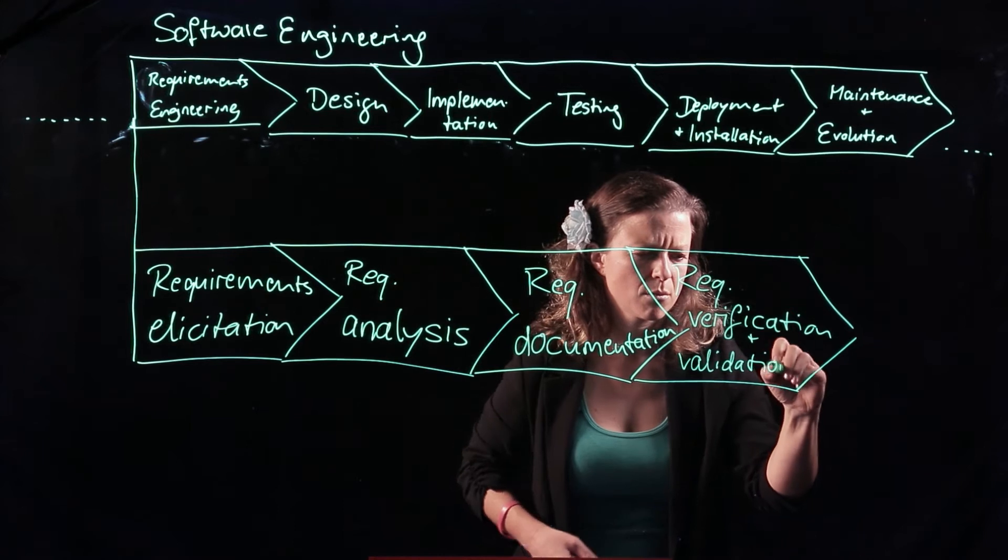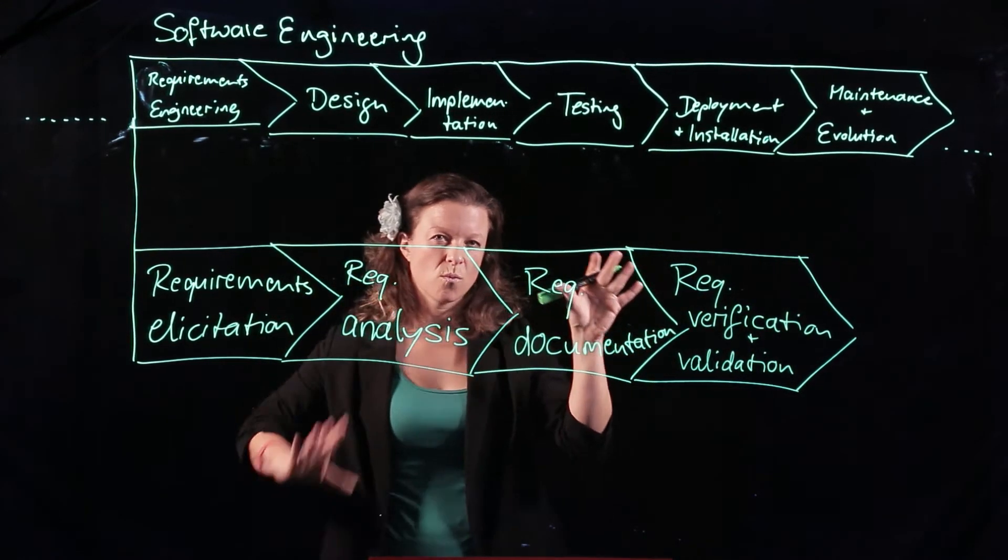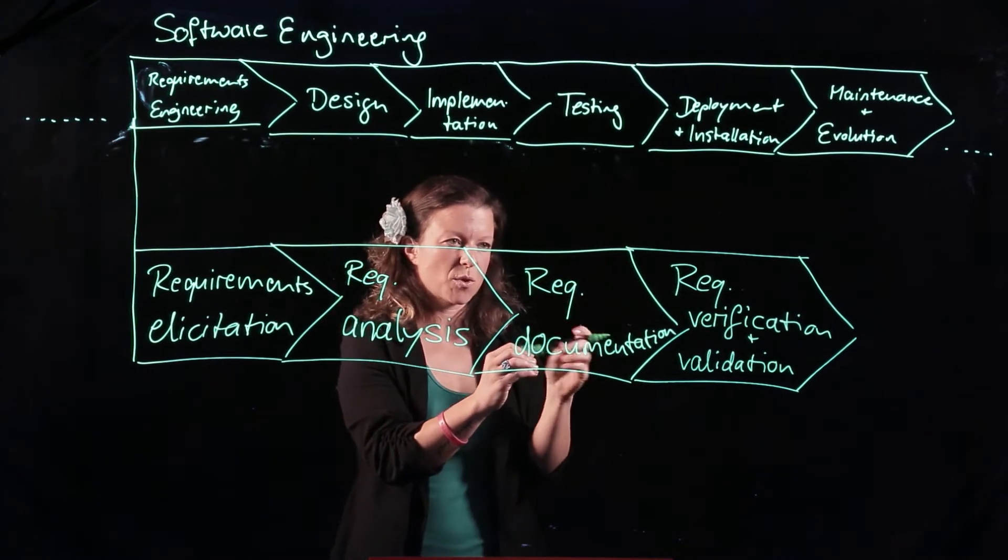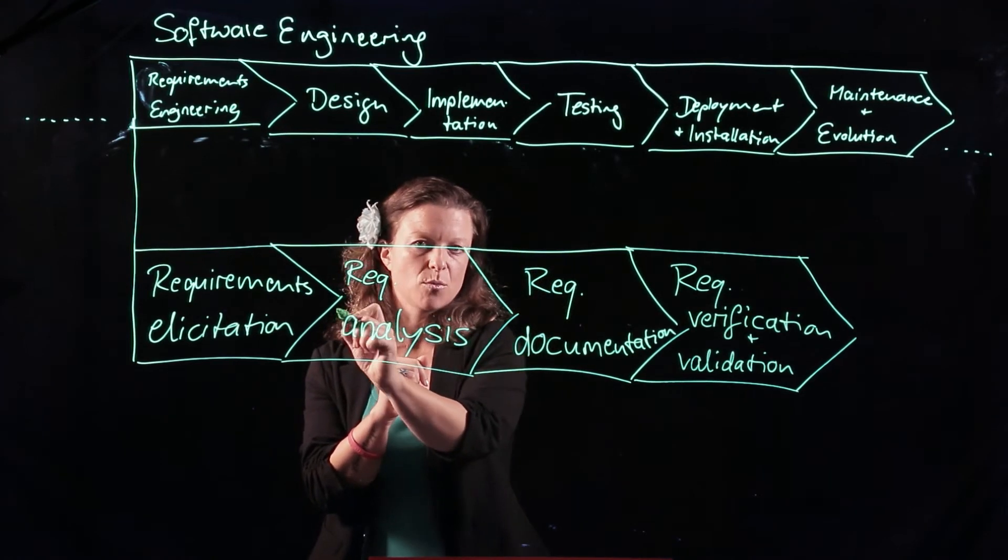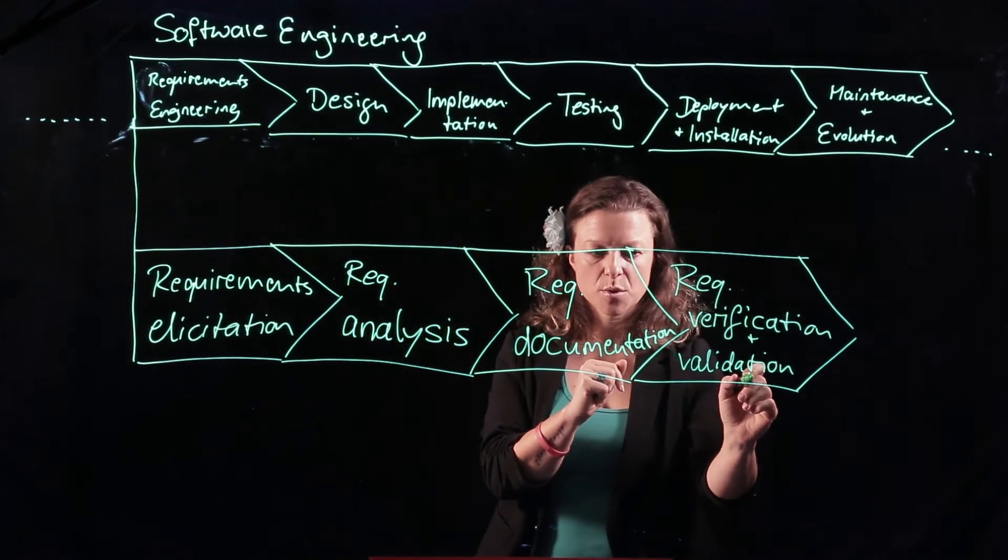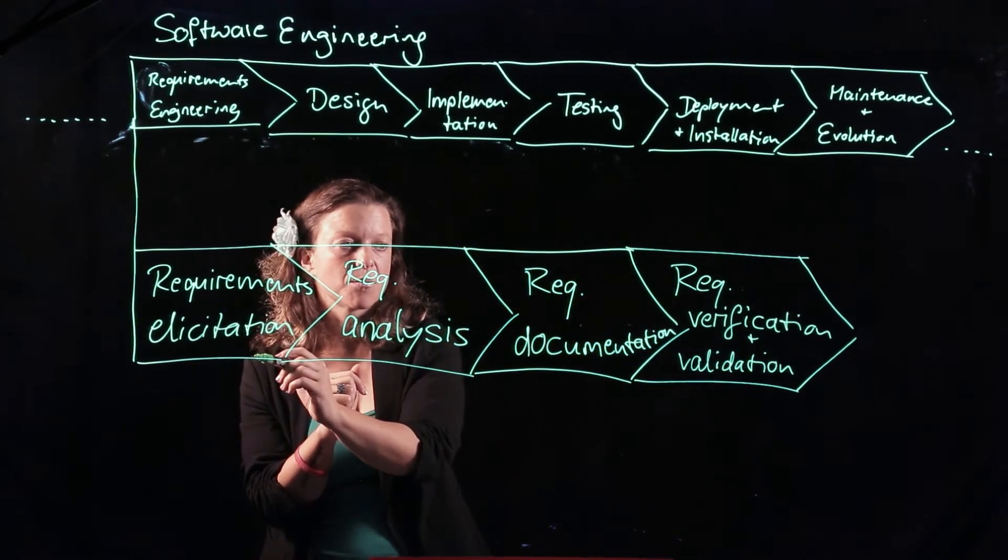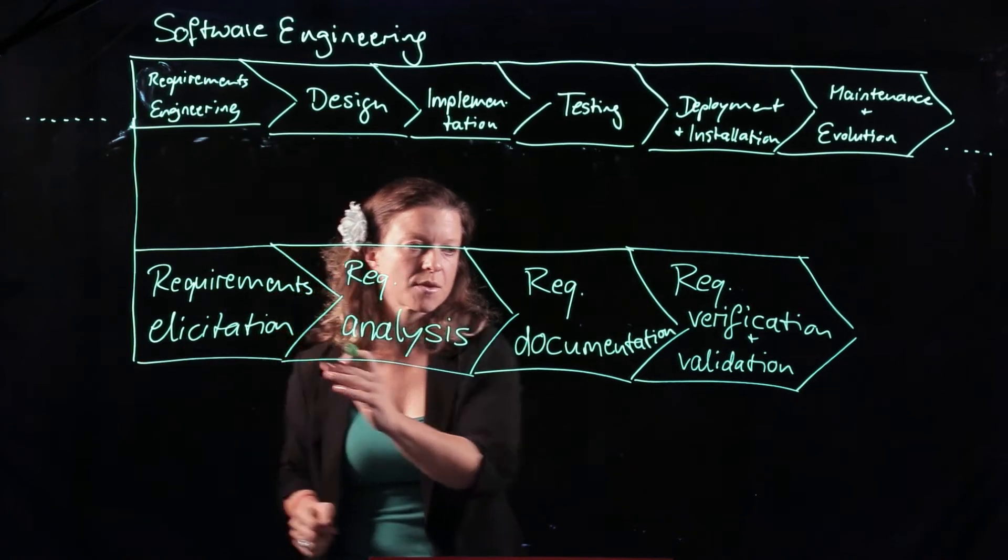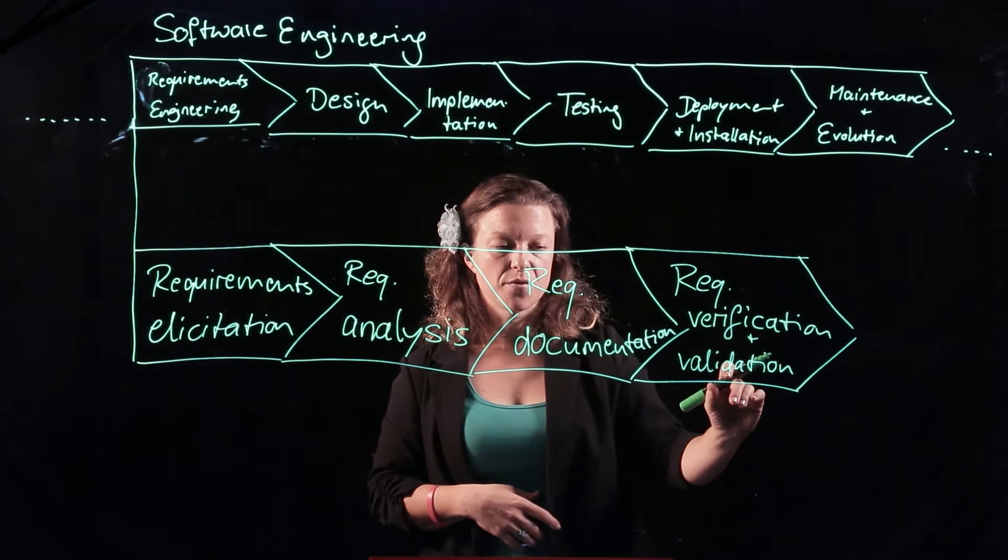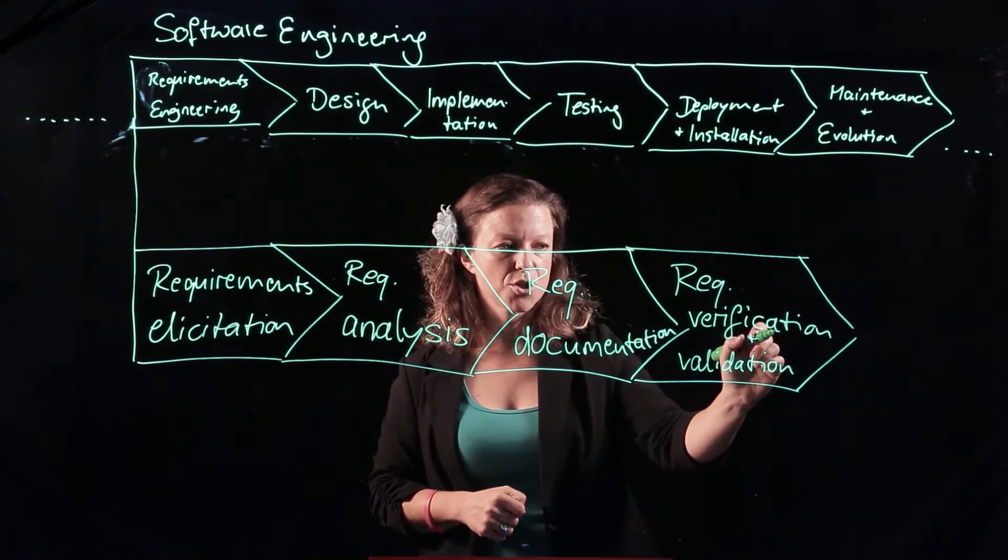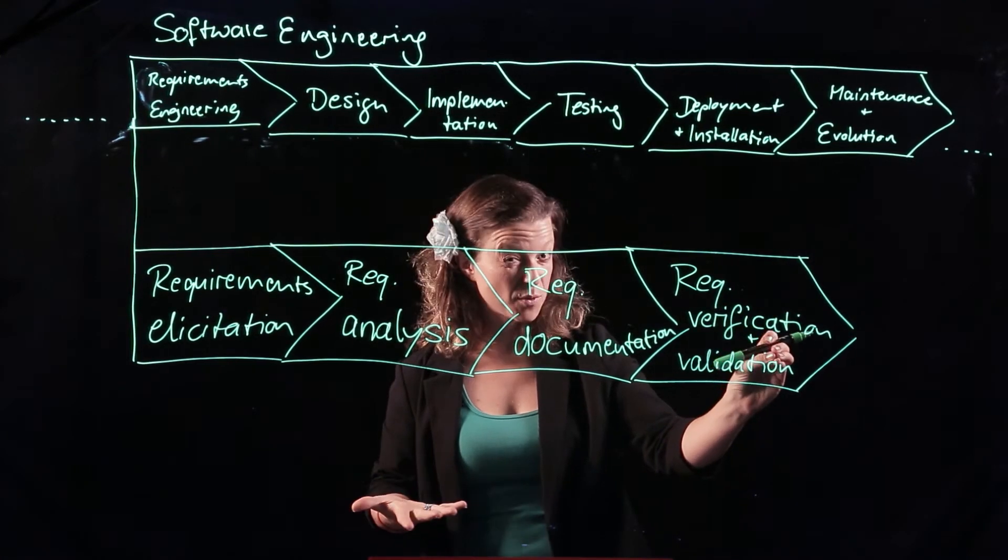Wait, now, which one is which? Verification, validation. So, verifying requirements is did I correctly write down what these people said? Validating the requirements means I go back to these people and ask them, is this what you really need? So, what we use as a mnemonic for verification and validation is verification is, am I building the system right? And validation asks, am I building the right system?